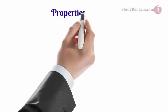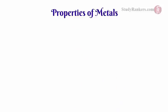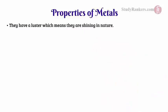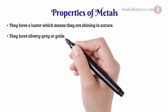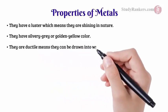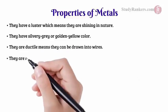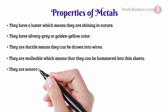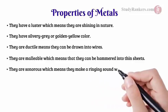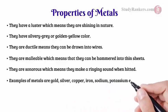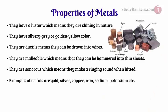Now we will know about the properties of metals, non-metals, and metalloids. Properties of metals: they have a lustre, which means they are shining in nature; they have silvery grey or golden yellow color; they are ductile, meaning they can be drawn into wires; they are malleable, meaning they can be hammered into thin sheets; they are sonorous, meaning they make a ringing sound when struck. Examples of metals are gold, silver, copper, iron, sodium, potassium, etc.